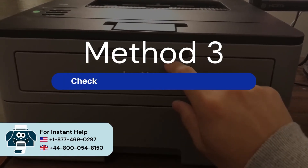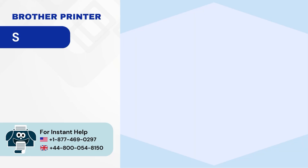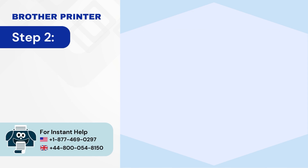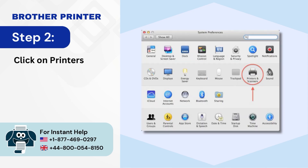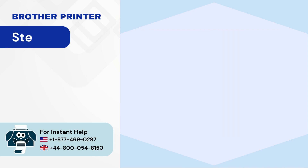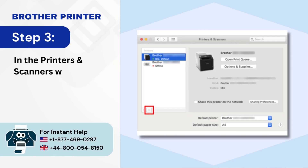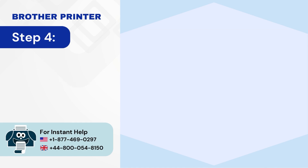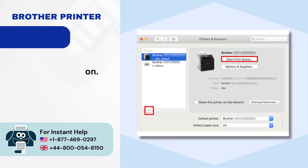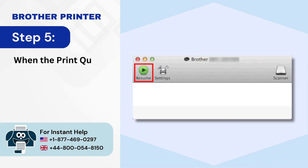Method 3: Check the Status of your Brother Printer. Step 1: Click on the Apple menu and select System Preferences. Step 2: Click on Printers and Scanners in the System Preferences screen. Step 3: In the Printers and Scanners window, click on your Brother Printer. Step 4: Next, click on Open Print Queue button. Step 5: When the Print Queue screen appears, click on Resume.